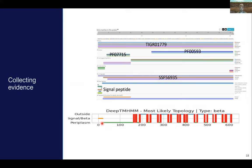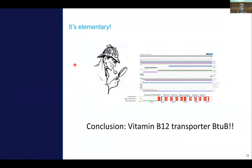After collecting evidence — a TigerFAM hit spanning the full protein, PFAM functional domains, a SuperFamily hit, a signal peptide, and transmembrane helices identified by TMHMM — you look at all the associated information from these accessions and draw your conclusion. In this example: it's the vitamin B12 transporter BTUB. Evidence collected, case solved.